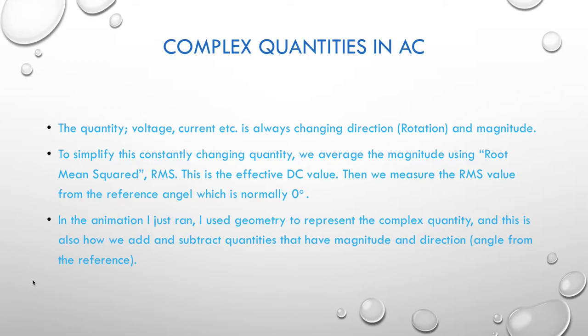So complex quantities in AC. The quantity, whether it be voltage, current, etc., is always changing direction. It's rotating and its magnitude is varying. To simplify this constant changing of the quantity, we can average out the magnitude using root mean squared, or RMS. This is the effective DC value. When we measure the RMS value from the reference angle, it is normally at zero degrees. In addition, I used geometry to represent the complex quantity. And this is also how we add and subtract quantities that have magnitudes and directions, or angles from the reference.